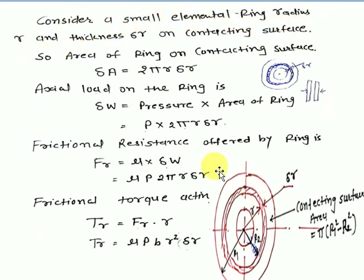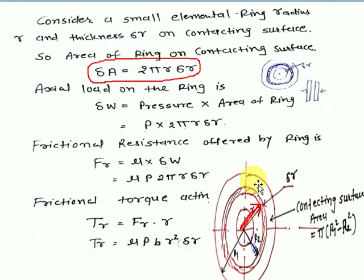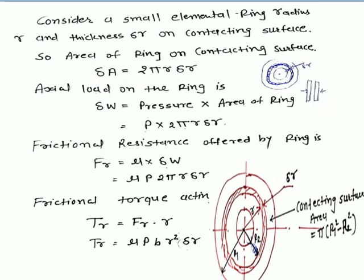Consider a small elemental ring at radius r with thickness δr on the contacting surface. The area of this particular ring element is δA = 2πr·δr — that is, the circumference (2πr) multiplied by the thickness δr. This δA represents the area of that particular ring element.